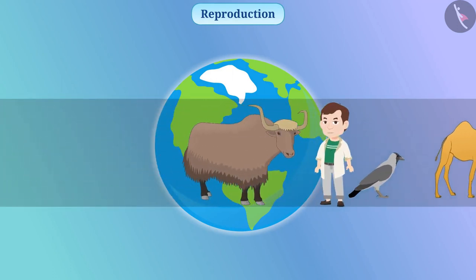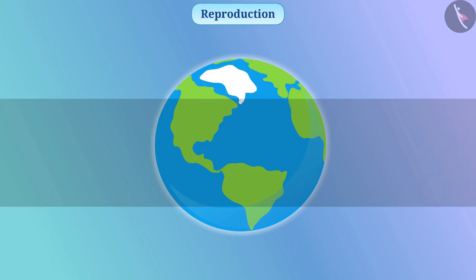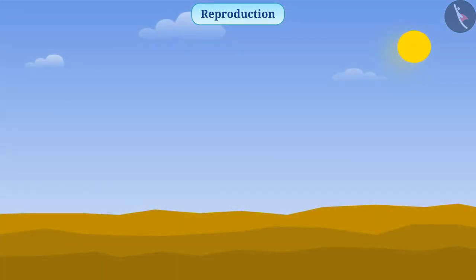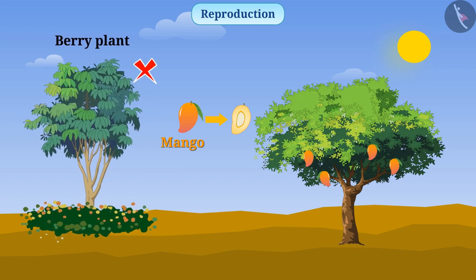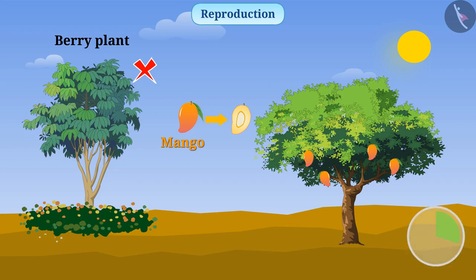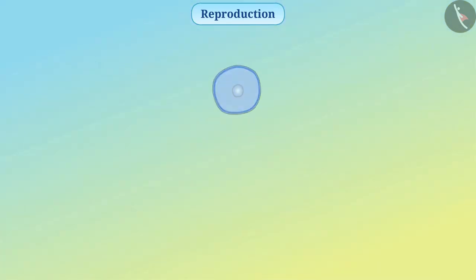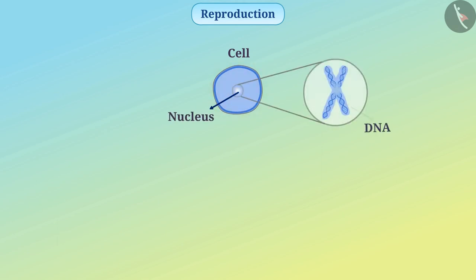Let's talk about important parameters of reproduction. You must know that the seed of a mango produces a mango tree — it does not produce a berry plant. Why is it so? The body of every organism is made up of cells that consist of a nucleus which contains DNA.